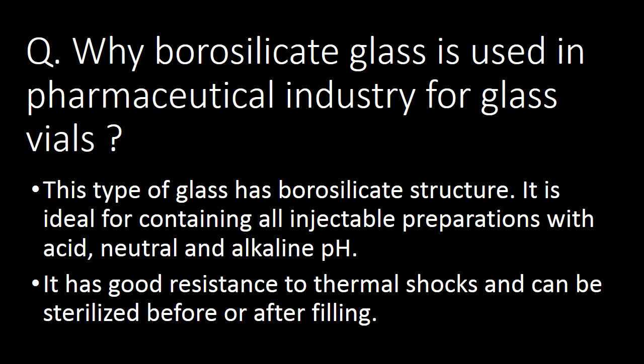Next question: why is borosilicate glass used in the pharmaceutical industry for glass vials? This type of glass has a borosilicate structure and it is ideal for containing all injectable preparations with acid, neutral, and alkaline pH. It has good resistance to thermal shocks and can be sterilized before and after filling.